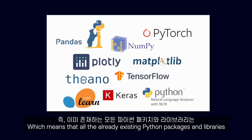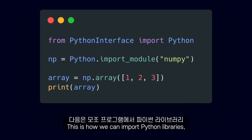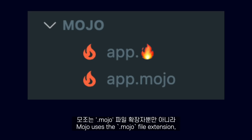Mojo also aims to be fully Python compatible, which means that all the already existing Python packages and libraries will all work in Mojo by default. This is how we can import Python libraries — in the case of NumPy — from a Mojo program.